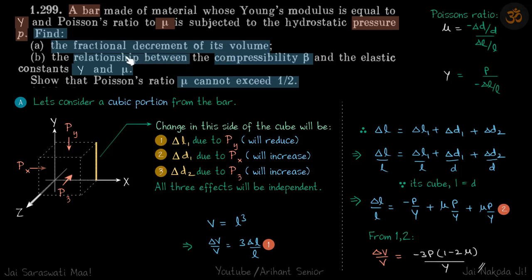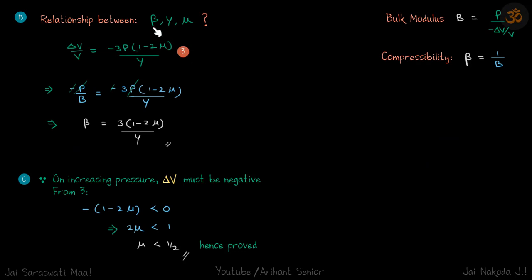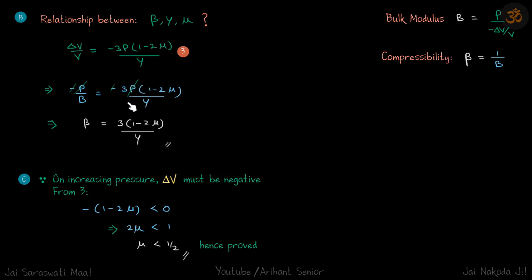Now for the second part: the relationship between compressibility and Y and mu. Compressibility beta is the inverse of bulk modulus, and bulk modulus is p divided by minus delta V by V — the negative sign is because as pressure acts on the volume, delta V is negative, and bulk modulus must be positive. We already derived that delta V by V equals minus 3p(1 minus 2mu) by Y. Replacing and writing bulk modulus as 1 by beta, we obtain the relation between beta, Y, and mu.